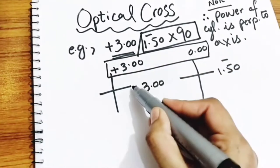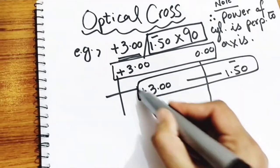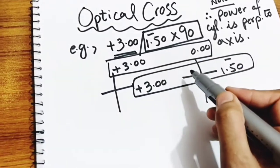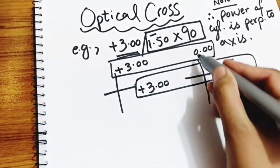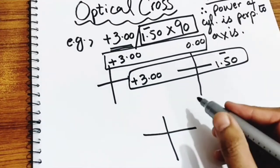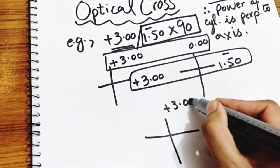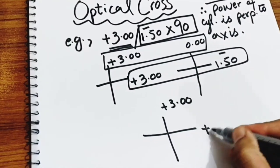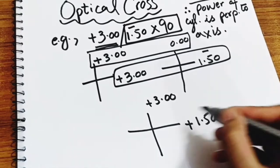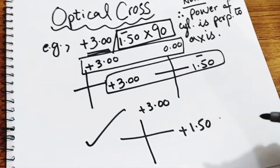We will algebraically add both. +3.00 will add with 0.00, will become +3.00. +3.00 will algebraically add with -1.50, will become +1.50.